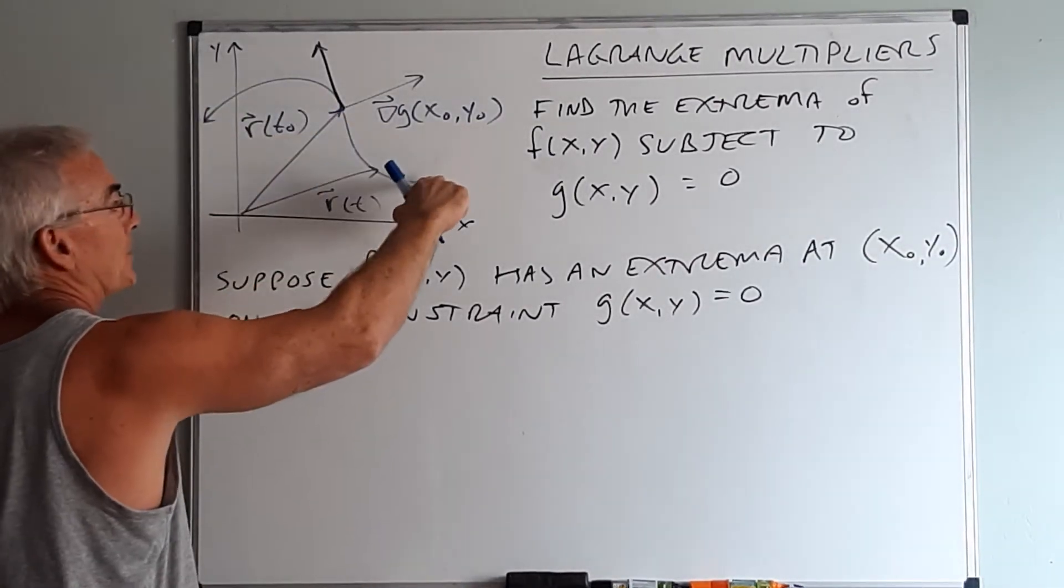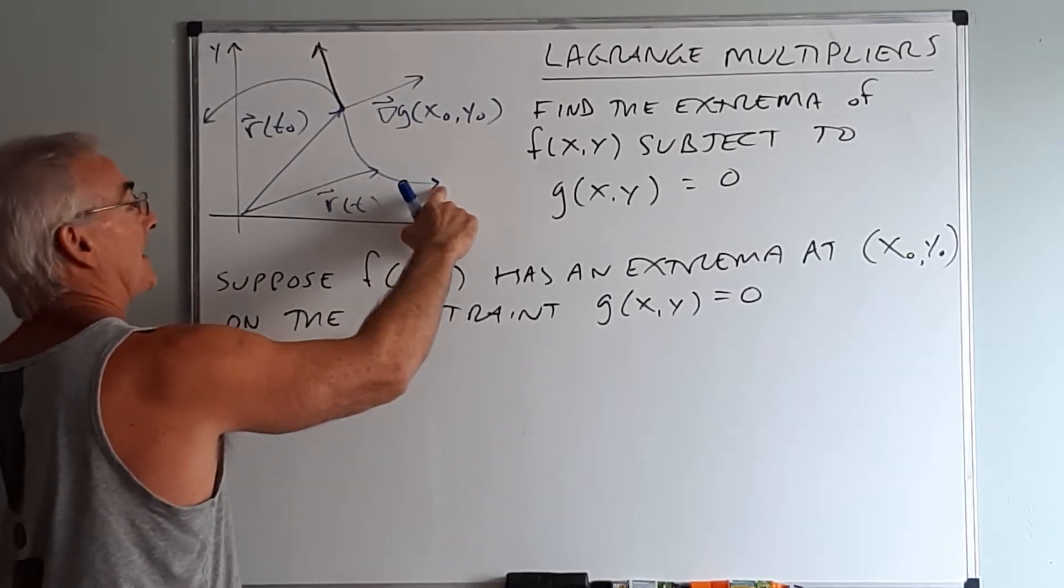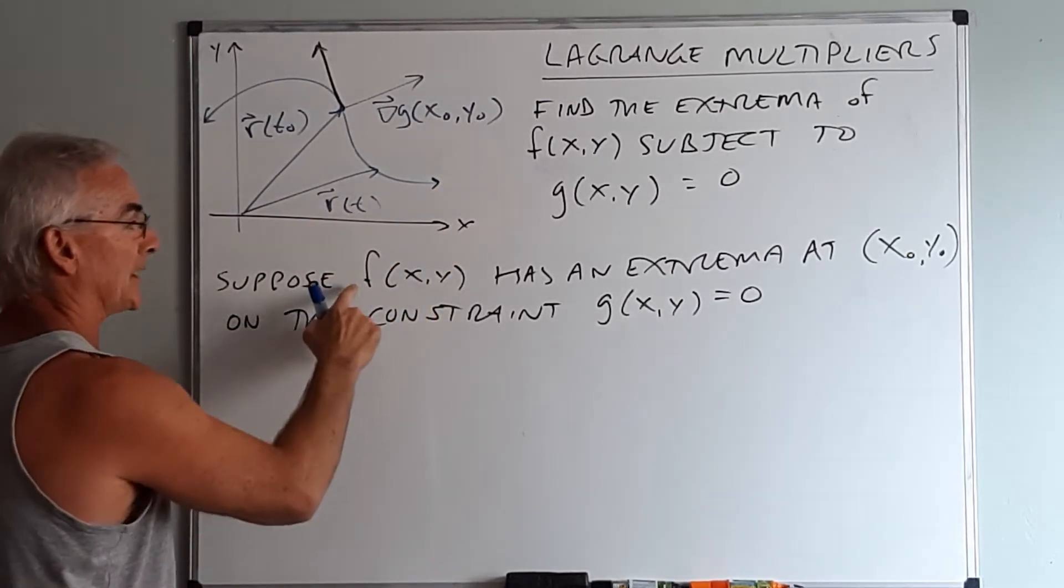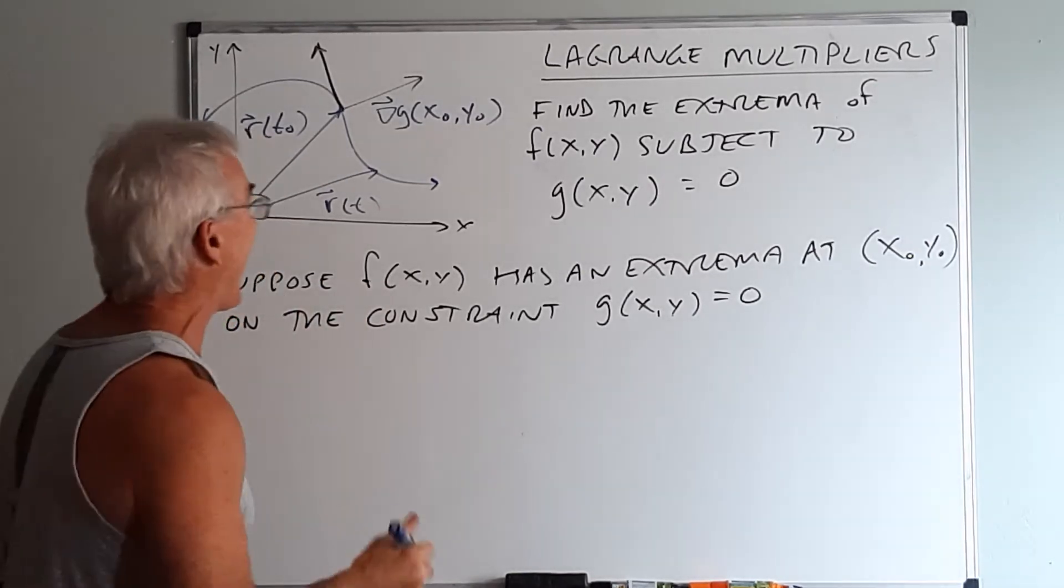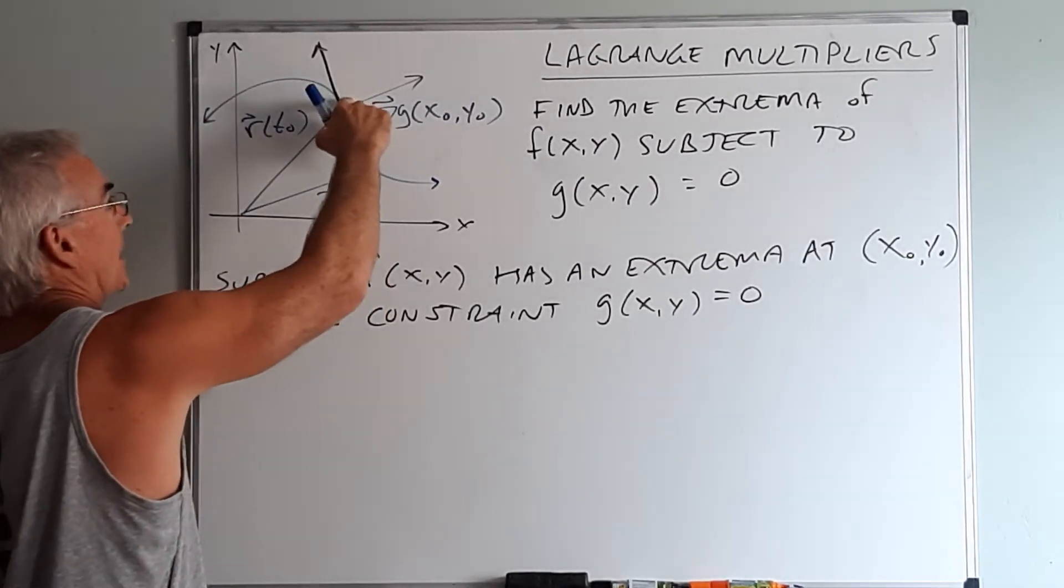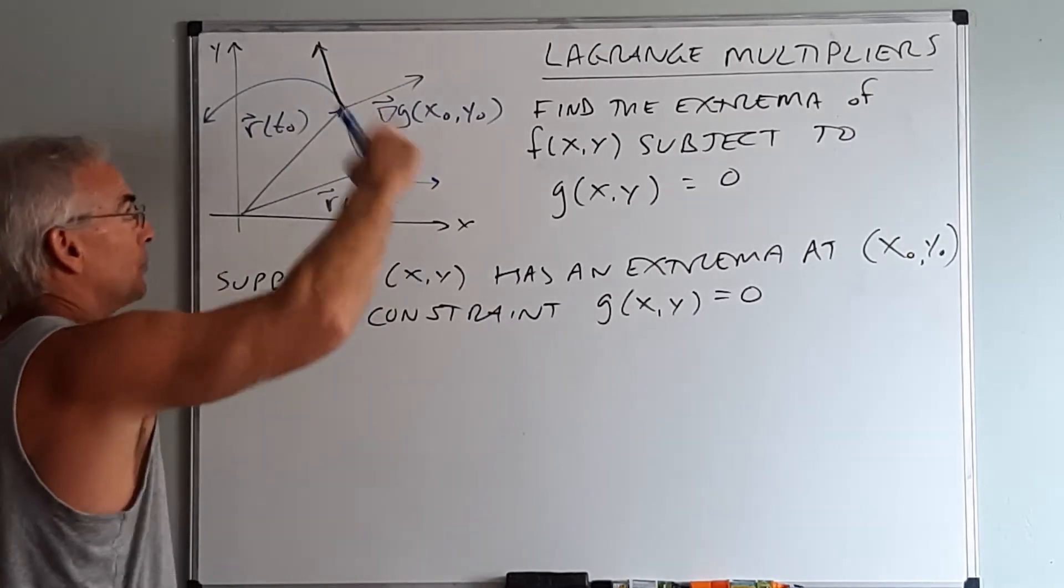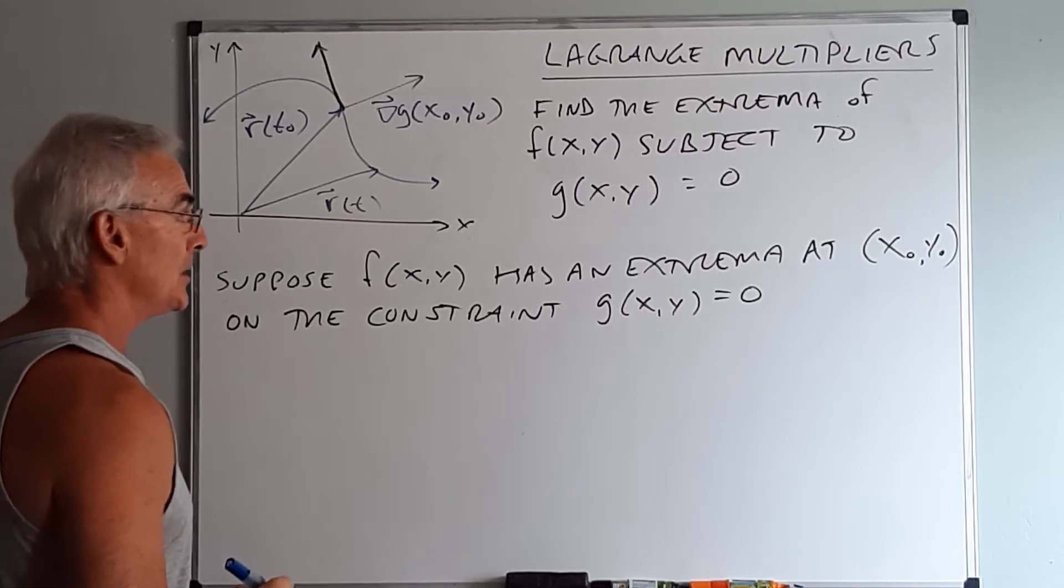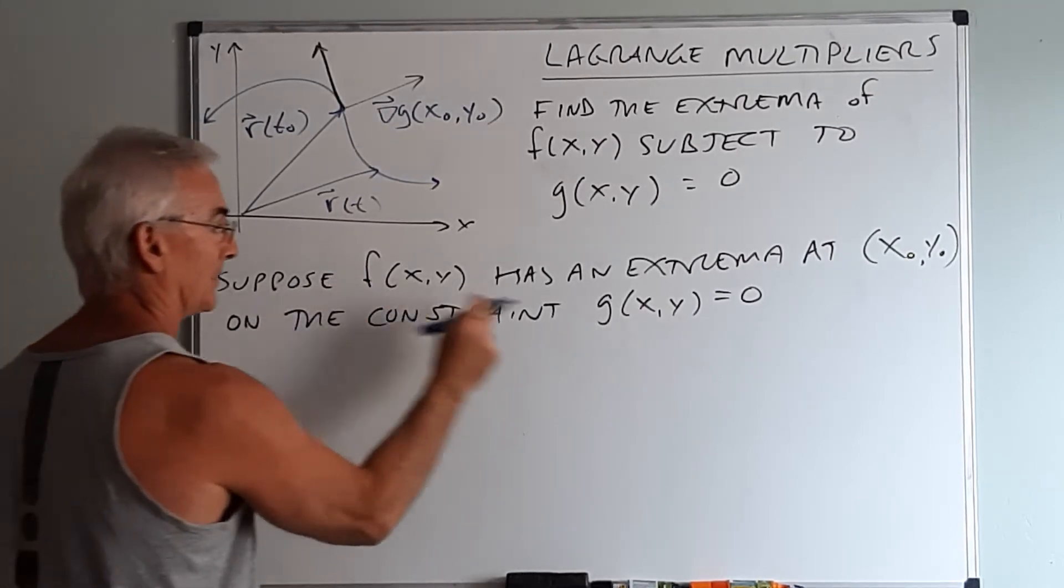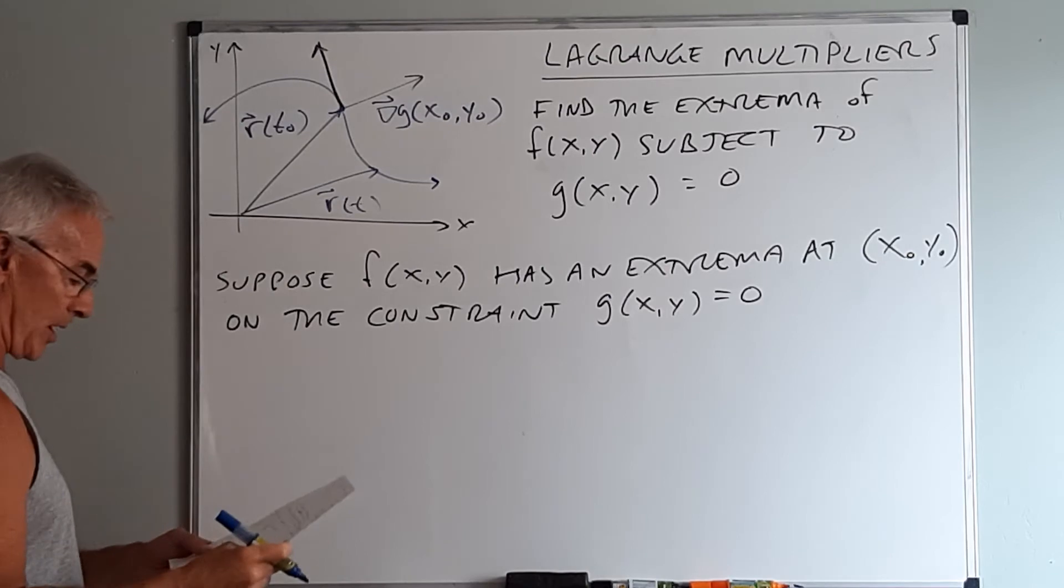So I'm going to use the same picture. This curve represents g of x, y equals zero. And let's suppose that our function f of x, y actually has an extreme either a maximum or a minimum at the point x naught y naught. I don't see f of x, y in this picture. I only see the constraint in this picture. So what we want to do is develop a relationship between f and g in order to solve the problem.